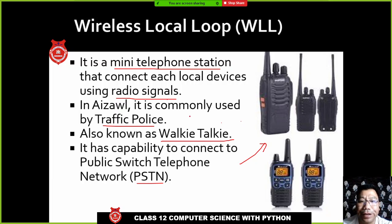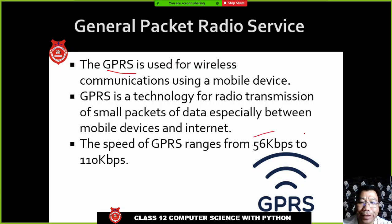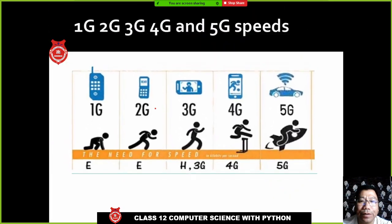GPRS stands for General Packet Radio Service. This was the first internet service provided through mobile data. The speed is very limited — 56 kbps to 100 kbps.